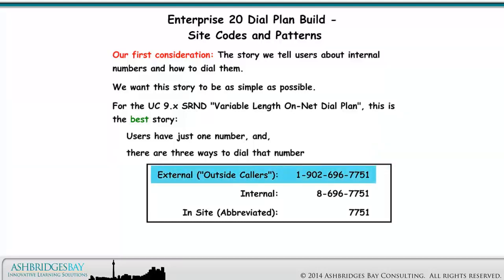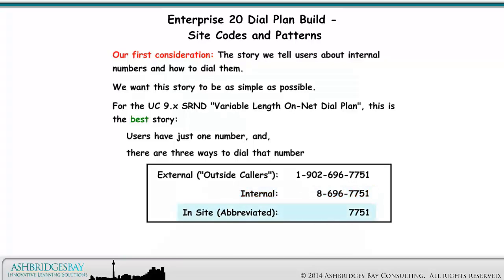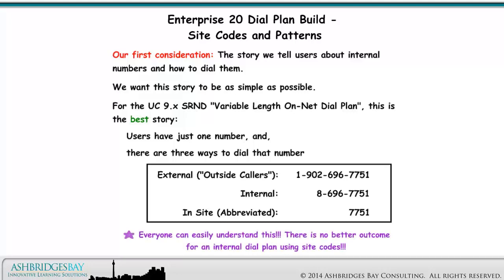External, or outside callers, dial 1-902-696-7751. Internal callers dial 8-696-7751. And within the same site, abbreviated dialing, we dial 7751. Outside callers will know whether the 1 is required or not, so we don't need to worry about that. Everyone can easily understand this. There is no better outcome for an internal dial plan using site codes.